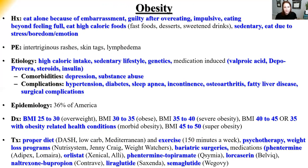BMI classifications for diagnosis: 25–30 is overweight; 30–35 is obese; 35–40 is severe obesity; 40–45 (or 35 with obesity-related conditions like diabetes) is morbid obesity; and 45–50 is super obesity. This classification system would make an excellent exam question.